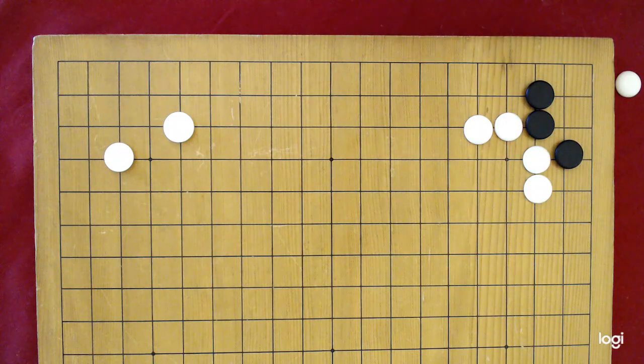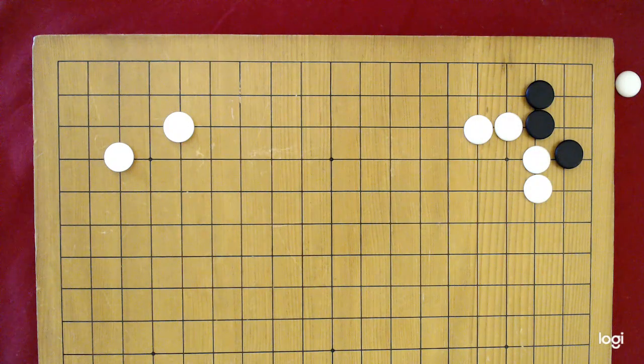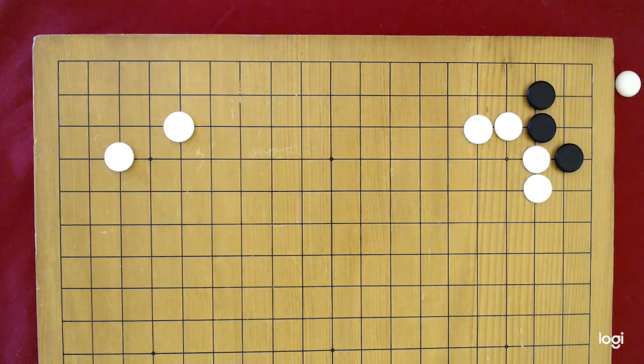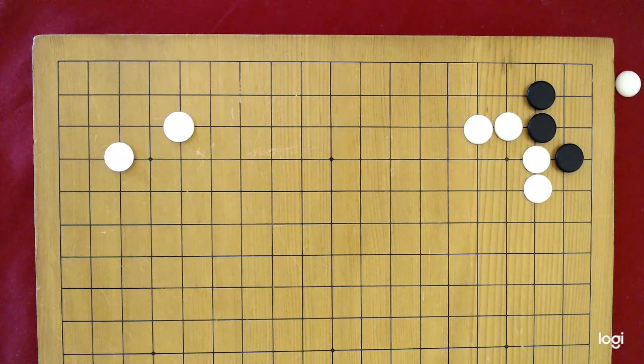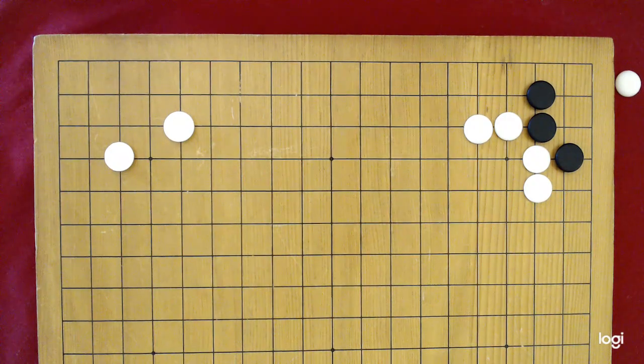So here it is right here. These three spaces here are unconditionally alive as long as black plays correctly. It's kind of an odd shape.